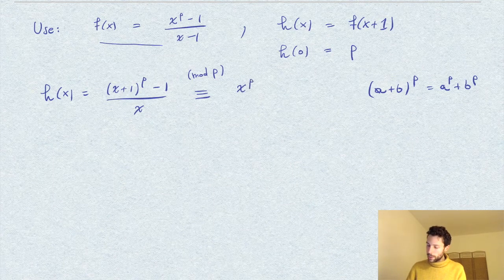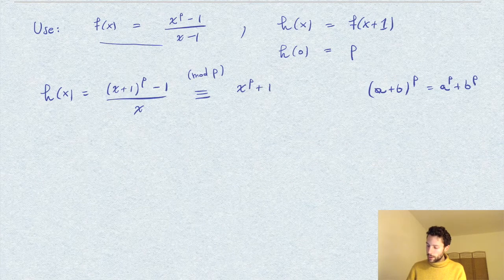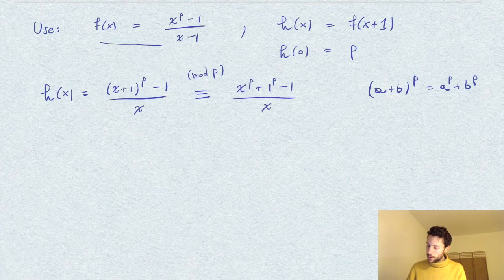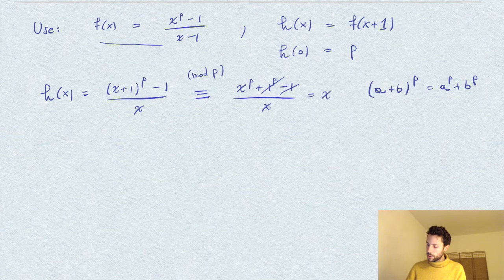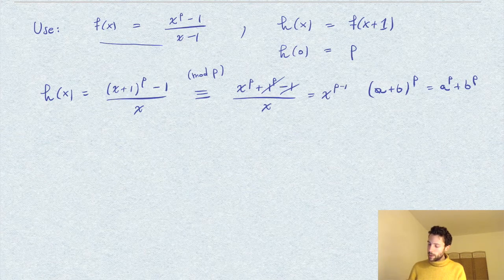Namely, it would be x to the power p plus 1 to the power p minus 1 over x. And of course this gets cancelled, and this is equal to x to the p minus 1.